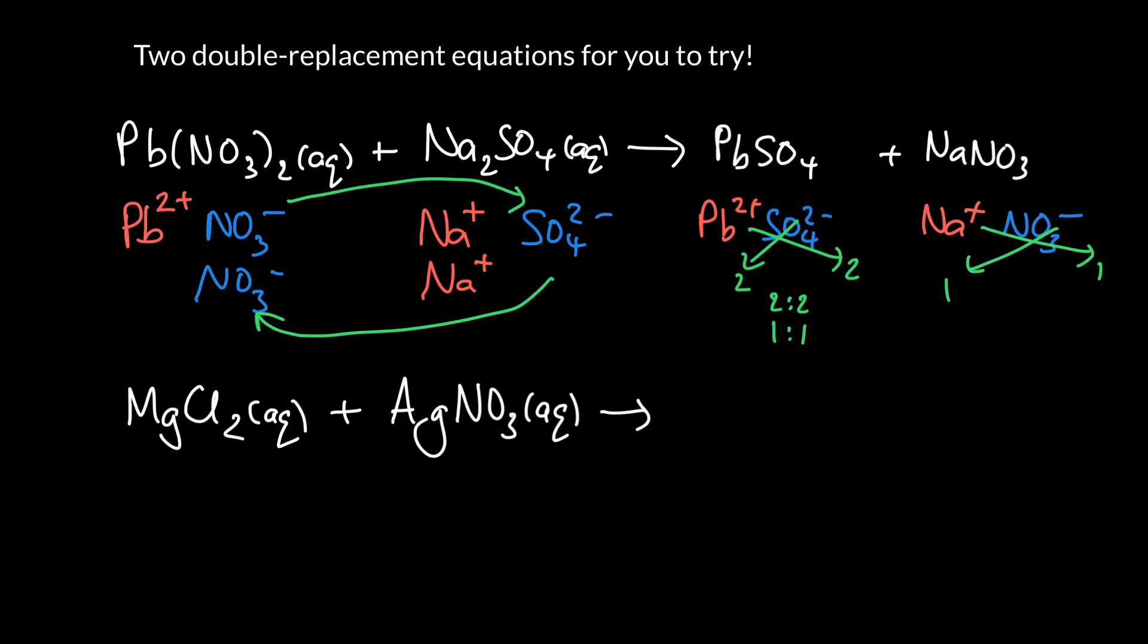It's not balanced yet. Remember, we can balance using the whole ions. There's two nitrates here. There's only one here. So we can balance it maybe first by placing a coefficient of 2 there. And is everything else balanced? There's two sodiums here and here. There's one sulfate here and here. And there's one lead here and here. So actually, that's balanced.